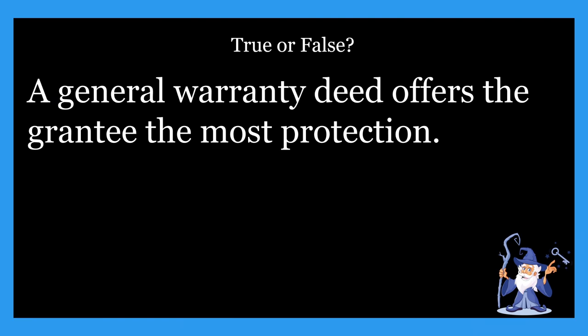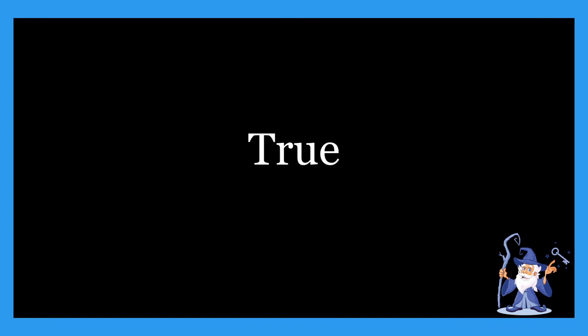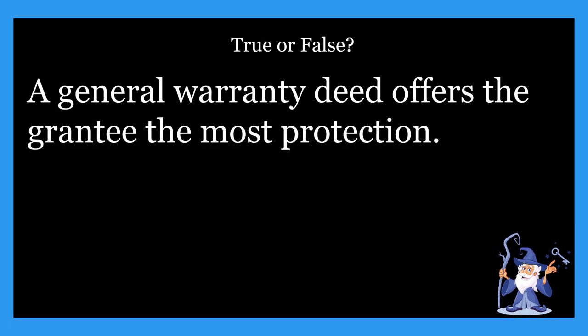Next one: a general warranty deed offers the grantee the most protection. Is that true or false? This one is going to be true. A general warranty deed offers the grantee the most protection — you need to remember that: most protection. With this type of deed, the grantor makes a series of legally binding promises called covenants and warranties to the grantee, agreeing to protect the grantee against any prior claims and demands of all persons whomsoever in regards to the conveyed land. That is 100% true.